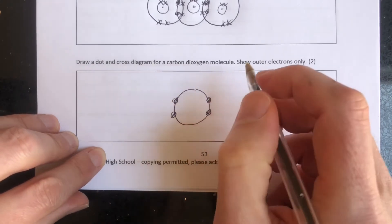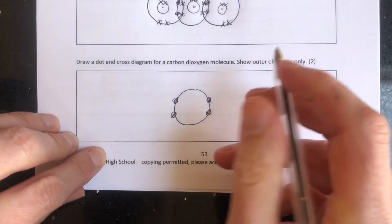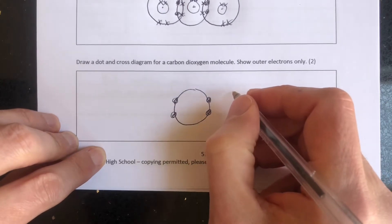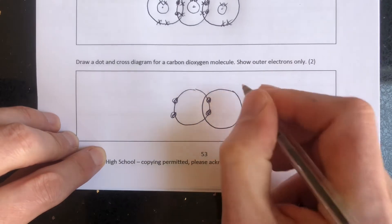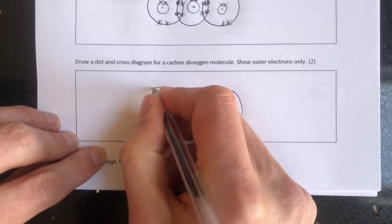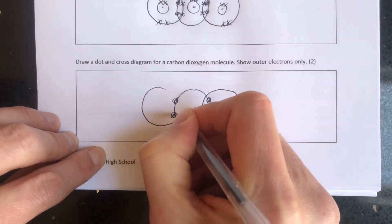Oxygen's got an atomic number of eight, so that would be two on the first shell, six on the second shell. So it will need two extra electrons, so it's going to form two covalent bonds. So I'm going to draw oxygen over two of those electrons there. I'm going to draw another oxygen over two of these electrons here.